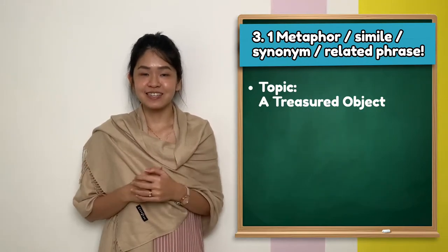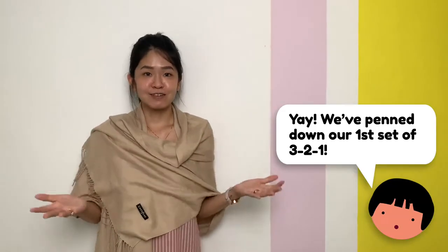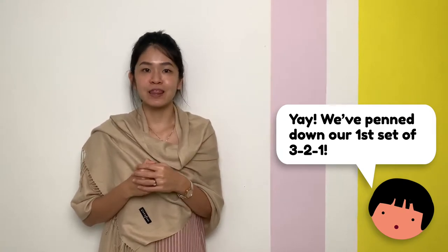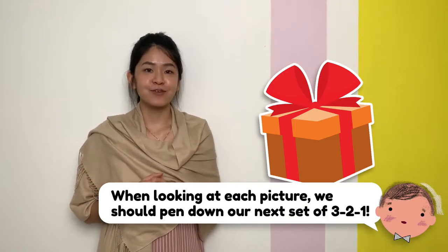Looking at the topic, a synonym that I can think of is a prized possession. Now that we have penned down our first set of 3-2-1, we should move on to look at the pictures provided. This is the first picture. When looking at each picture, we should pen down our next set of 3-2-1.